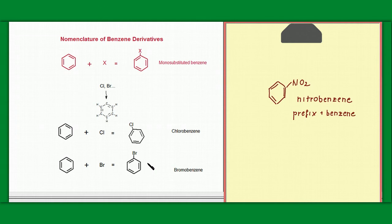Our molecules have the prefixes chloro, bromo, and nitro for chlorobenzene, bromobenzene and nitrobenzene.